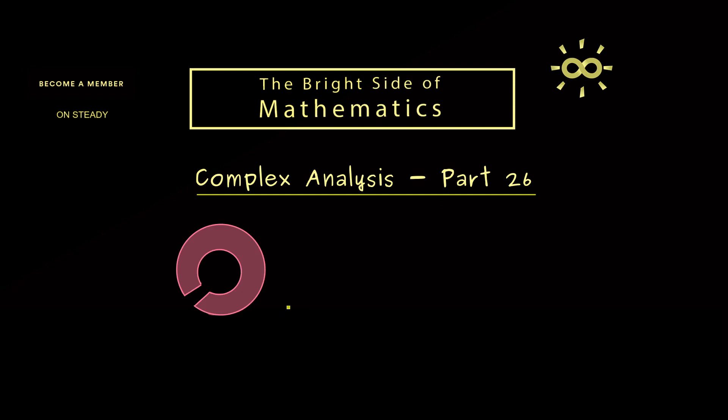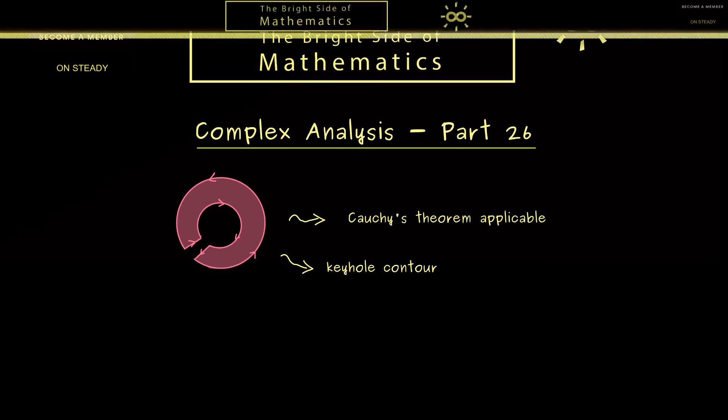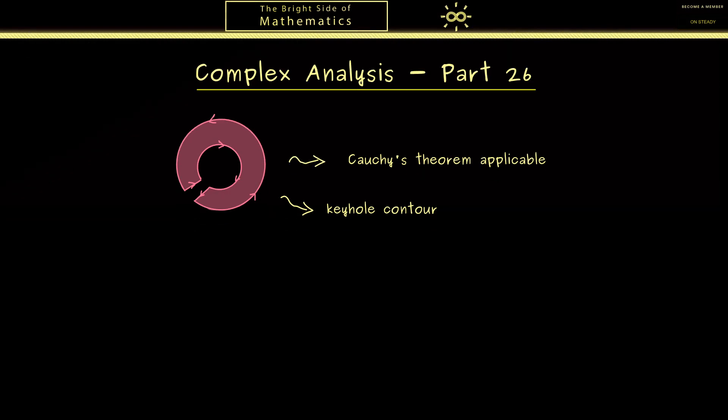First, please recall in the last video we have generalized Cauchy's theorem for such domains. Now today we will talk about curves that have exactly the shape here on the boundary. Because it looks a little bit like a keyhole, it's often simply called a keyhole contour.